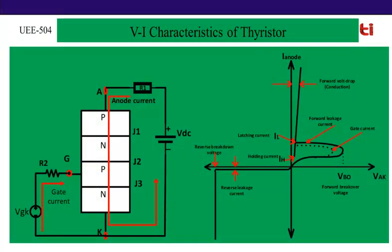Here we are going to find VI characteristics of thyristor. Let's start with the assumption that gate current is 0. At this condition, if the supply voltage VDC or anode to cathode voltage is increased, junctions J1 and J3 are already forward biased and junction J2 is reverse biased. As the DC voltage VDC is increased, junction J2 at a particular voltage will break down — that is known as avalanche breakdown. Then the four layers will be flooded with majority carriers and current will flow from anode to cathode. Here the thyristor is turned on without any gate current, but at very high DC voltage.